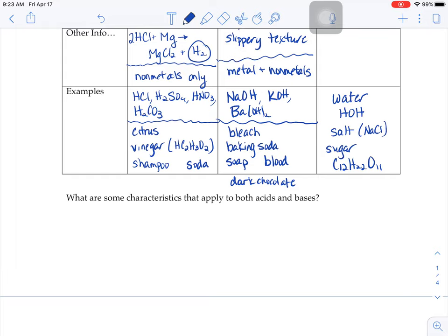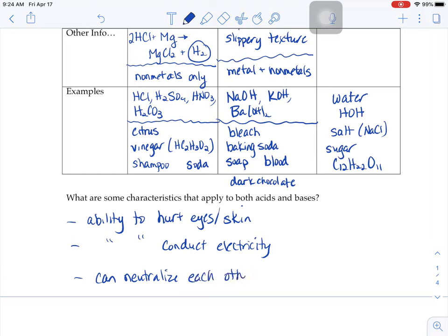Some characteristics that apply to both acids and bases: they both have the ability to hurt your eyes or skin. A lot of people think that that's just an acid thing, but it could be bases too. If you imagine putting your hand in a bucket of bleach all day, that wouldn't be really good for your skin, right? So it's not an acid only thing to hurt skin or hurt eyes. They both have the ability to conduct electricity. Not all acids conduct electricity, not all bases conduct electricity, but both of them can conduct electricity, depending on the situation. It's not an acid only thing or a base only thing. And they can neutralize each other. If you have a base that needs to be neutralized, you can add an acid. If you have an acid that needs to be neutralized, you can add a base.